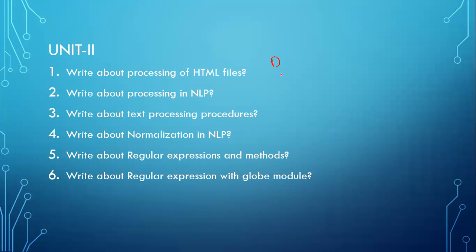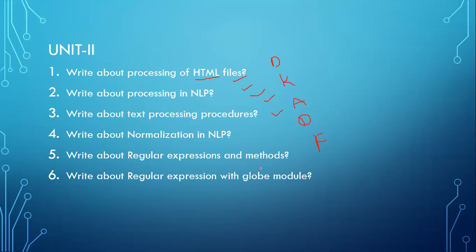For each topic you must write the definition, key points, advantages, disadvantages, and features. For example, for HTML: write what it is, how to create an HTML file, how to execute it, the advantages, disadvantages, and key points. For every topic, prepare using these five considerations and you will get a good score.